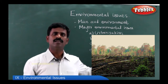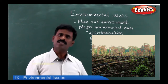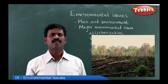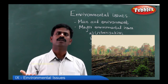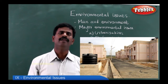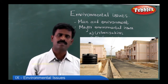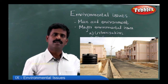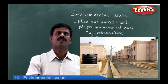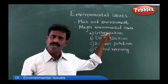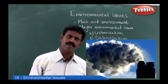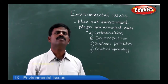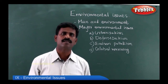Because of everyone's greed, deforestation takes place. People indiscriminately cut down forests and create more and more space for buildings. They go for real estate business, but deforestation causes the scarcity of rain. It is because of deforestation that the greenhouse effect is created, environmental pollution takes place, and global warming is also contributed to.